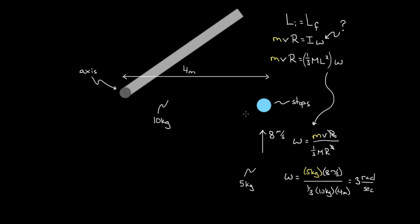Now, what would be different if instead of stopping, the ball bounced backward at two meters per second? Now the final angular momentum wouldn't just be the rod's — you'd have to include the angular momentum of the ball. But if the ball came in one way and then went backward, its angular momentum would have the opposite sign. So you'd add the ball's final angular momentum term with a negative value, since the direction reversed.